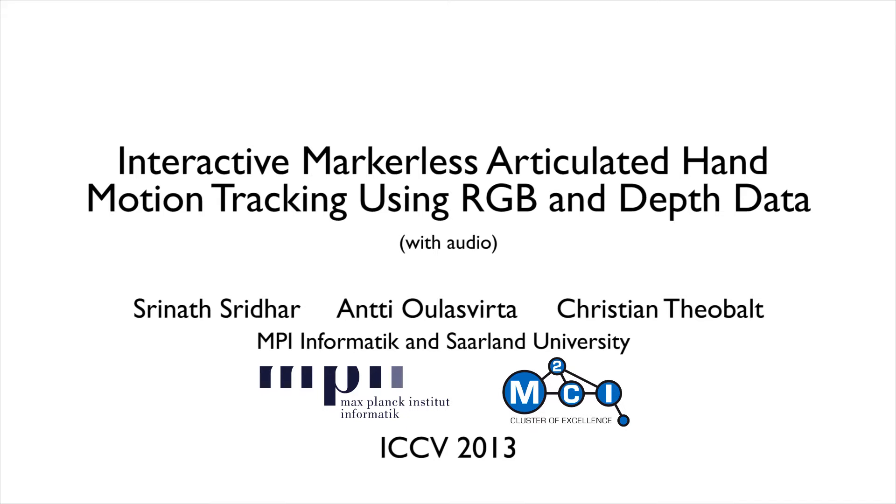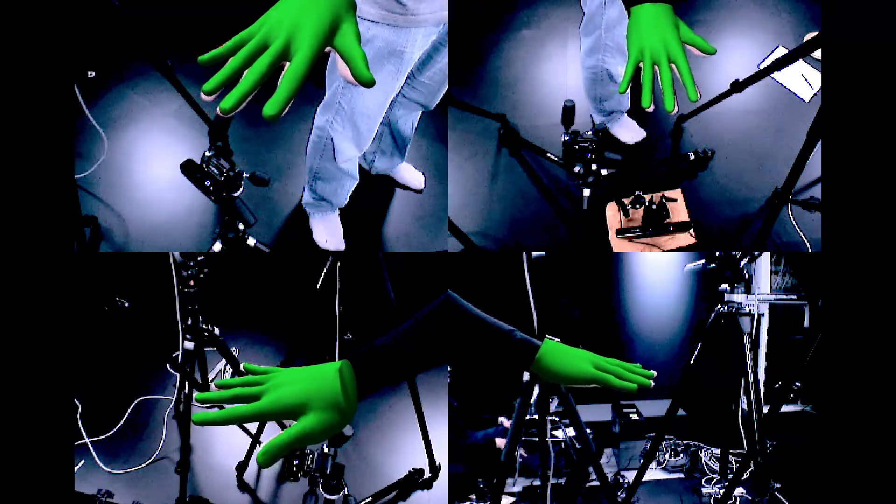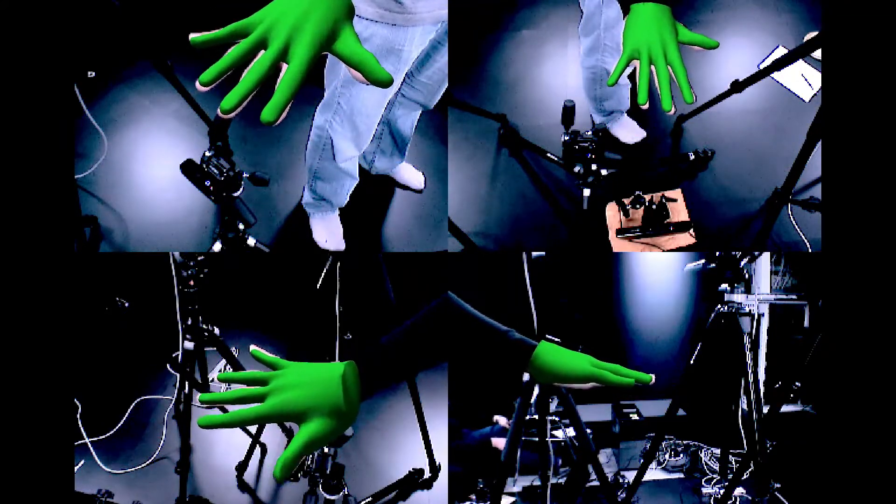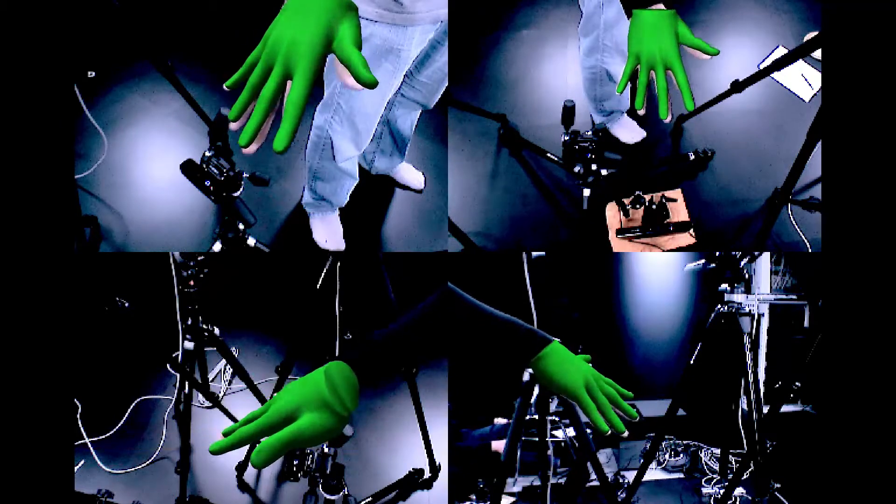We present a method for interactive tracking of articulated hand motion that combines discriminative part-based pose retrieval with a generative pose estimation technique.